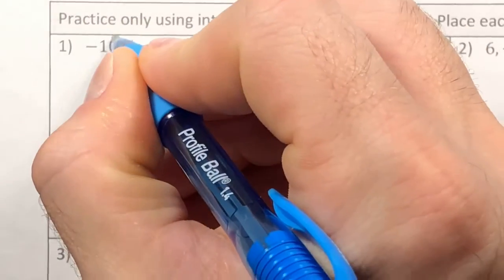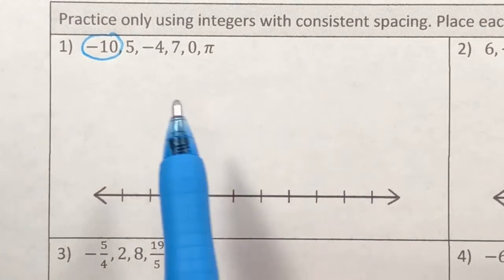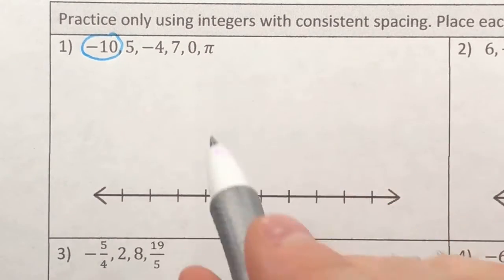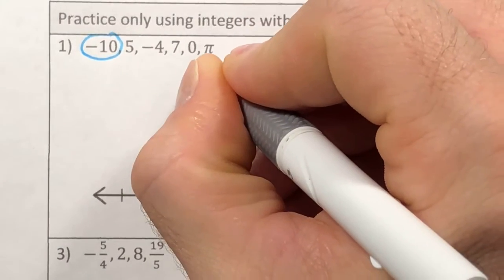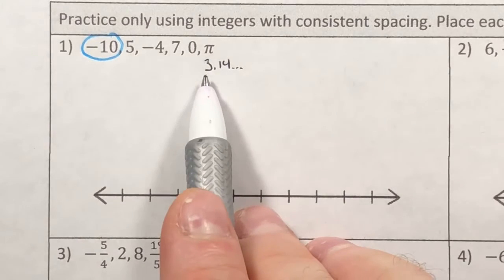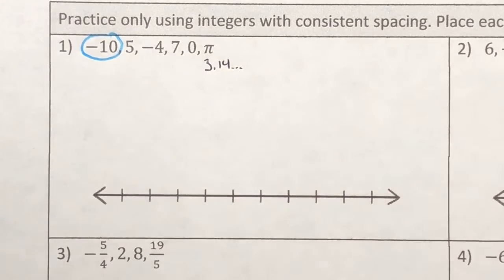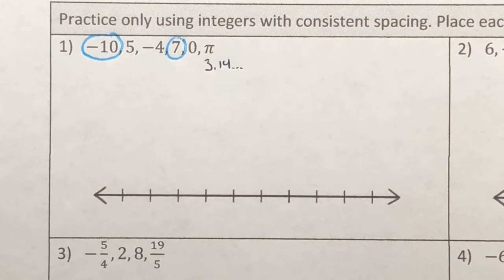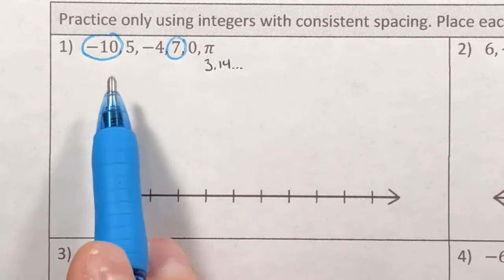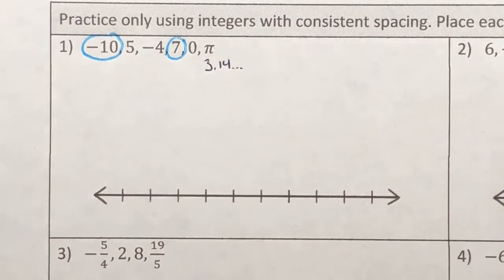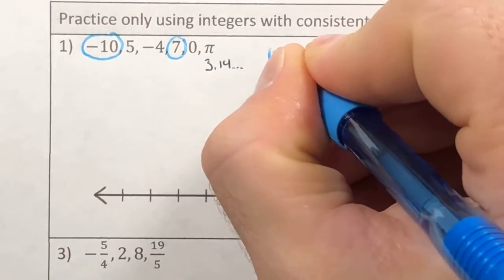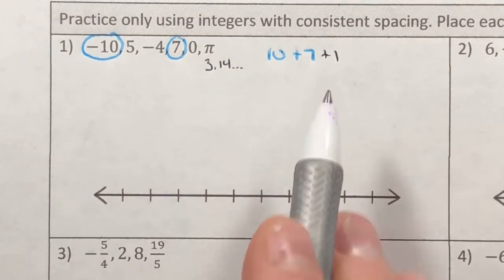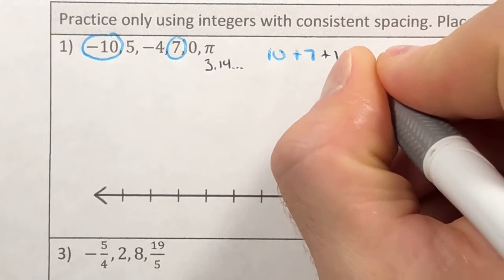The lowest number I can spot is negative 10 — that's my low number. My high number is 5 or possibly pi, which means I need to figure out what pi equals as a decimal. Pi is roughly equal to 3.14, but all I need to know is that it's roughly 3.1, so it's not going to outweigh that 7. Now the distance on my number line: I need to see how far left plus how far right, so I take the absolute value of each — 10 plus 7 — and add one for the zero marker, giving me 18.